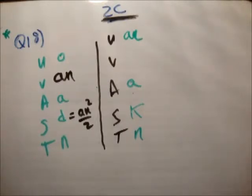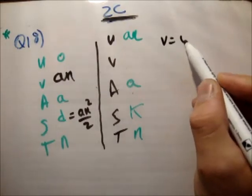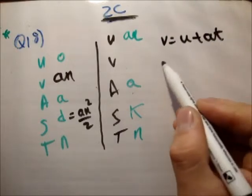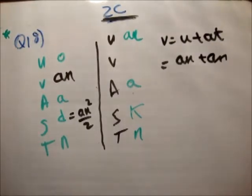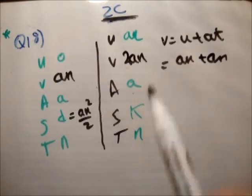So what do we do? We repeat the process. v is equal to u plus at is equal to an plus an is equal to 2 times an. Is that correct? Yeah. That's correct.